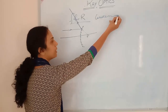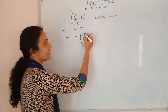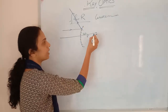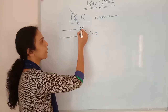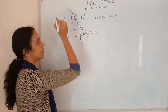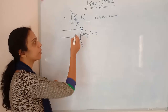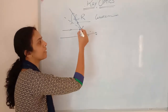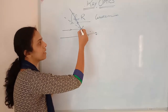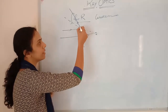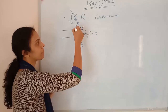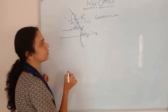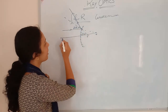Here I am considering this angle as theta. If I draw a line to the center of curvature, it will be the normal. So if this is theta, then this is also theta, and this also will be theta.